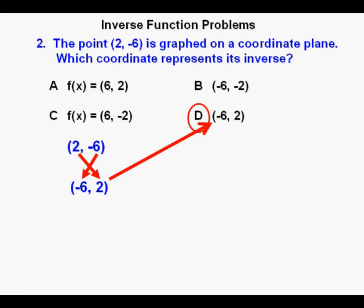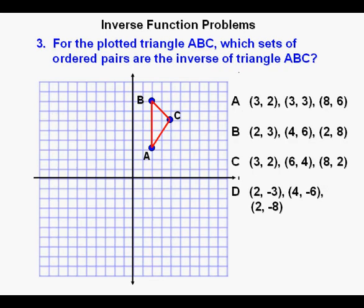Inverse function problem three. For the plotted triangle ABC, which sets of ordered pairs are the inverse of triangle ABC? Again, many ways are available to do this problem. I think that since we have ordered pairs as answers, a good strategy would be to find the ordered pairs of points A, B, and C.